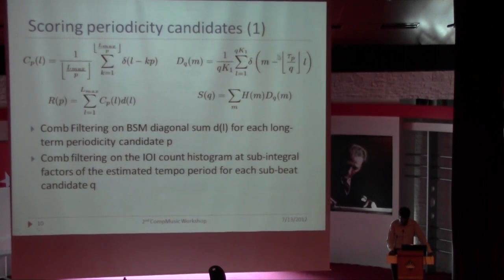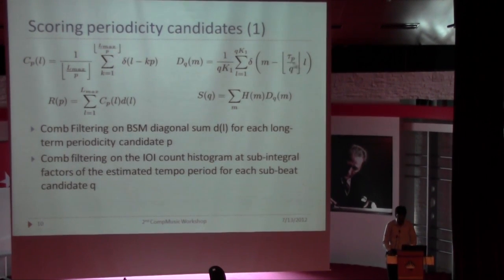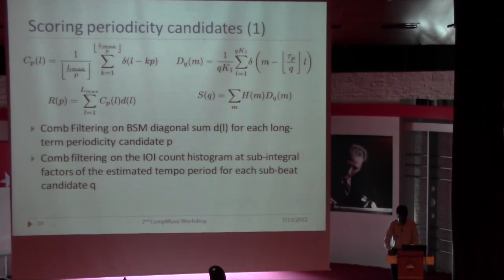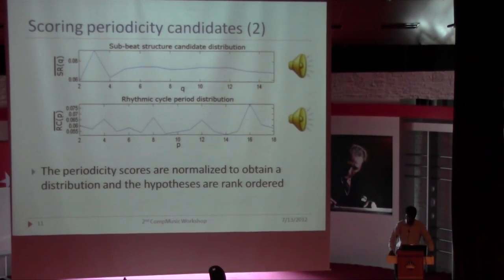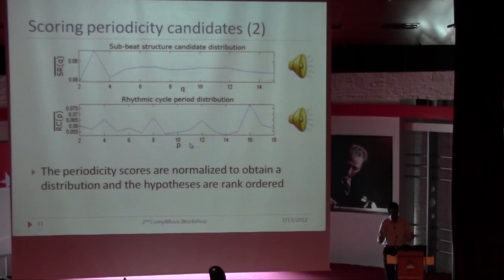For the subbeat structure, we go back to the original onset histogram, take the tempo period, and zoom into it by a factor of Q. If we're looking at a subbeat structure of 3, we look at every one-third of the tempo period and check for structure there. So P is the long-term cycle periodicity and Q is the subbeat structure periodicity candidate being tested.